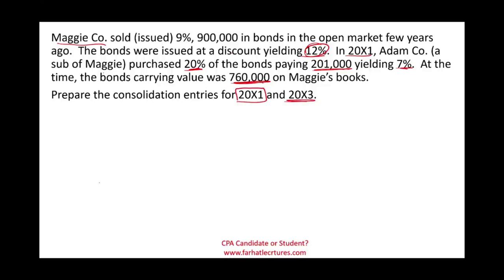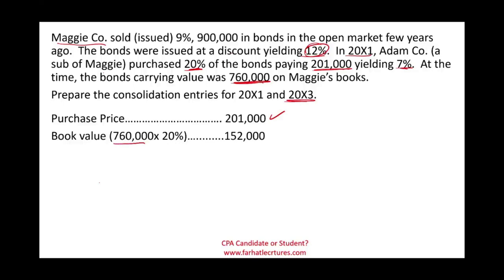Preparing consolidation entries for 20X1 is what a CPA candidate should be comfortable with. For 20X3, it's good to know but not required for the CPA exam. First, let's see the gain or loss. Adam paid $201,000. The bond's book value is $760,000 times 20% equals $152,000. We paid $201,000; the book value is $152,000, giving us a loss of $49,000.